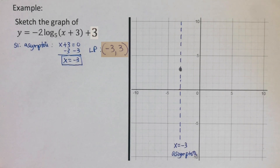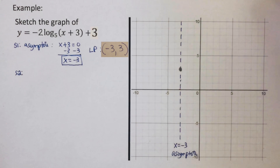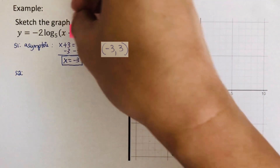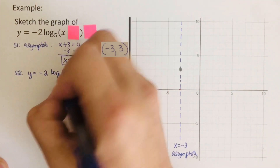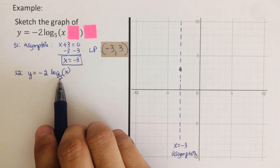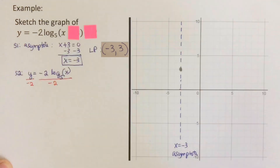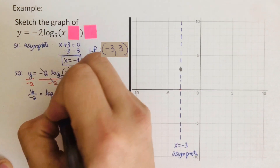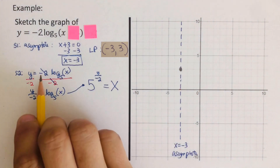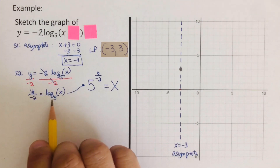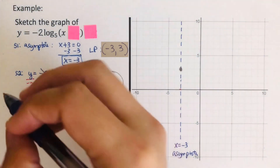Step two is to determine the equation to set up the table. To find the equation, we cover the h and the k — whatever is left over is the equation we'll use. That gives us y equals negative 2 times log base 5 of x. Since we have a negative 2, we divide both sides by negative 2. We then convert to exponential form. The exponential form is 5 to the power (y over negative 2) equals x — this is the equation we'll use to fill in the table.